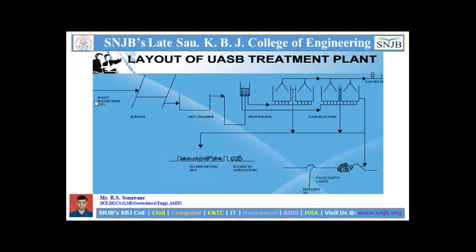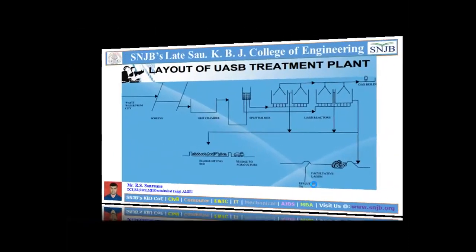The layout of the UASB treatment plant shows wastewater from the city going through a screening unit where floating material is removed, then to the grit chamber, then to a splitter box for further treatment. The UASB reactor provides combined pre-treatment and final treatment with respect to sludge, and may create biogas stored in a gas holder. Remaining sludge goes to a sludge drying bed or for agricultural use, and remaining water goes to a facultative lagoon.